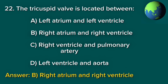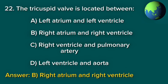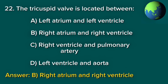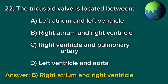Question 22. The tricuspid valve is located between: A. Left atrium and left ventricle. B. Right atrium and right ventricle. C. Right ventricle and pulmonary artery. D. Left ventricle and aorta. Answer: B. Right atrium and right ventricle.